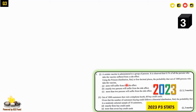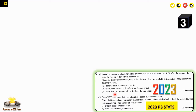Question 3 sub-1: A certain vaccine is administered to a group of persons. It is observed that 0.1% of all persons who take the vaccine suffer from a side effect. Using the Poisson distribution, find to four decimal places the probability that out of 1000 persons: (a) none suffer from the side effect, (b) exactly two suffer, (c) more than two suffer.